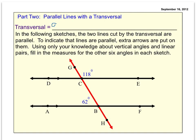A transversal is a line that intersects two others. A transversal is a line that intersects two other lines.